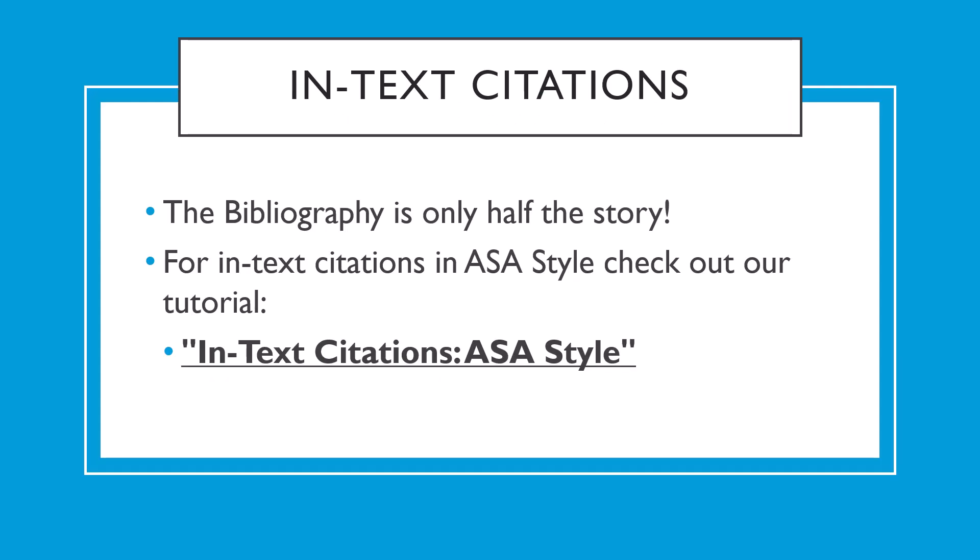That takes care of the bibliographic citation. But the bibliographic citation is only one half of a complete ASA citation. Every ASA citation has two parts: the bibliographic citation and the in-text citation. The bibliographic citation helps your reader know what book you got the information from, but doesn't tell the reader what part of your work was taken from that book, nor does it tell the reader where in the book you got that idea or quote. To learn more about in-text citations, check out our tutorial on in-text citations ASA style.